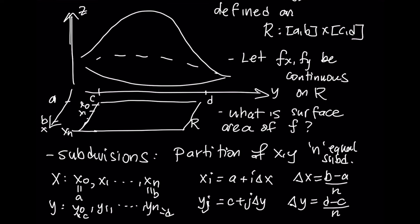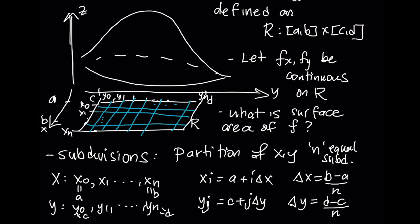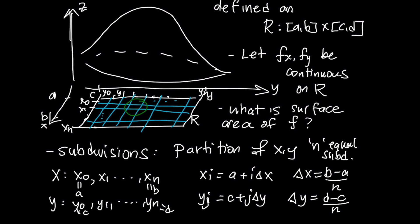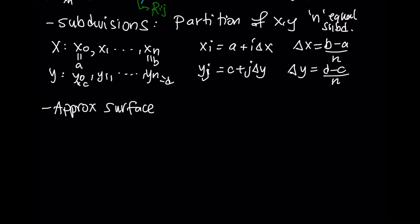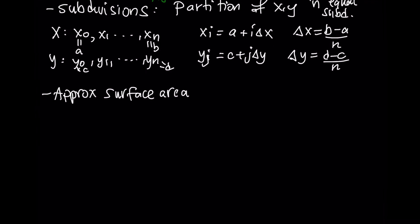Generally we don't need to use the same number of subdivisions, but for simplicity of our explanation we will do so. This creates a set of grid lines on our region, and doing the same in each direction creates a series of rectangles. Somewhere in this region there will be a general rectangle rij. We are going to approximate the surface area above each little rectangle rij.